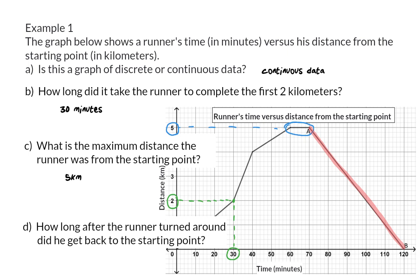Question D: How long after the runner turned around did he get back to the starting point? I have now already mentioned that he turned around at 70 minutes. Here, he started moving back, and he was back at the starting point with a distance of 0 after 120 minutes. So it took him from 70 to 120 minutes to run back, and that is a total of 50 minutes.